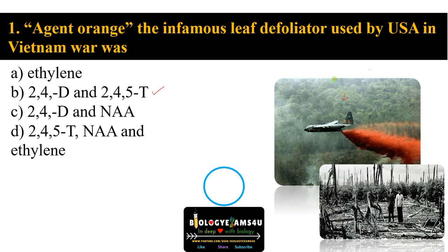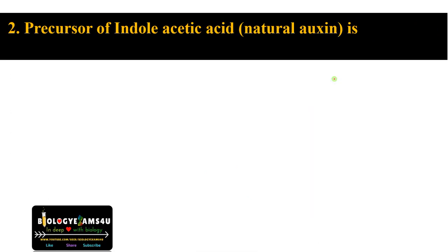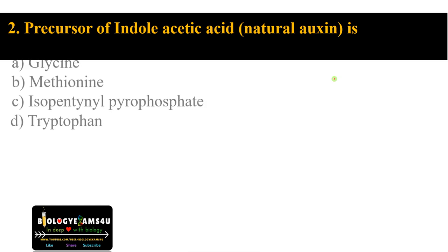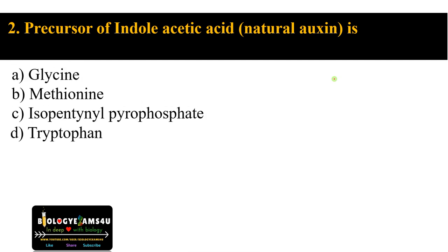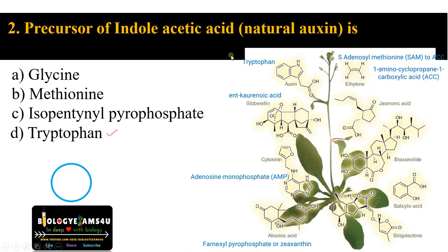For better understanding, you can watch that video and then attempt these MCQs. Moving into question number two: the precursor of indoleacetic acid, the natural auxin, is option A glycine, option B methionine, option C isopentanyl pyrophosphate, option D tryptophan. The answer is tryptophan.